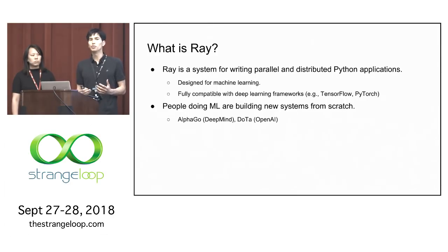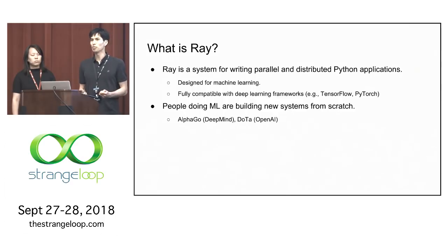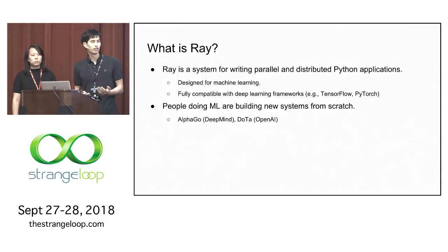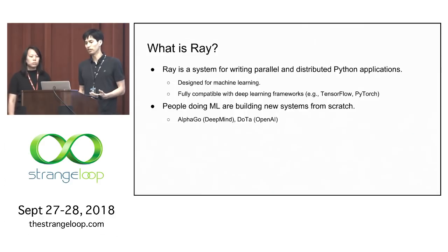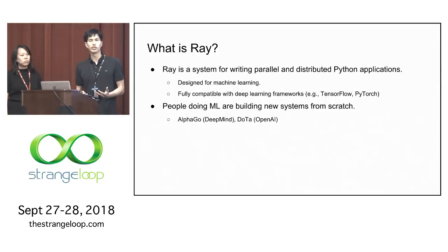Instead, they're often building new systems entirely from scratch for each new application. AlphaGo from DeepMind and Dota from OpenAI are two good examples of this, but there are many examples. So there's a lot of redundant engineering effort right now in machine learning.